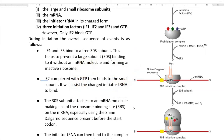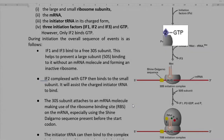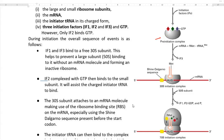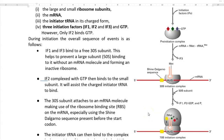IF2, complexed with the energy molecule GTP, binds to the small 30S subunit of the ribosome. It assists the charged initiator tRNA — that is, the methionyl or formyl-methionyl tRNA — to bind. In the next step, the 30S subunit attaches to an mRNA molecule, mainly with the help of the ribosome binding site in the mRNA. This ribosome binding site is present just before the AUG start codon.